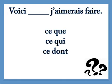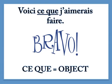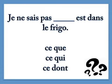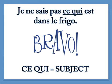So here's what I would like to do — and how do you say 'what'? Voici ce que j'aimerais faire — très bien. Je ne sais pas [blank] est dans le frigo — 'I don't know what's in the fridge.' Which one are you going to use? Je ne sais pas ce qui est dans le frigo — subject of the dependent clause. Bravo! Super! Très bien! You did a good job on that.